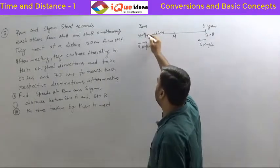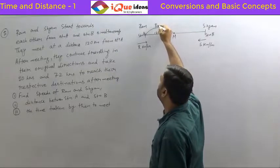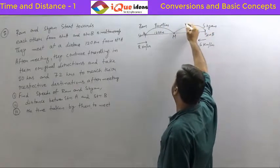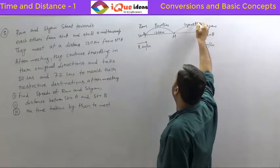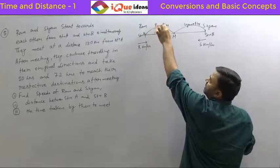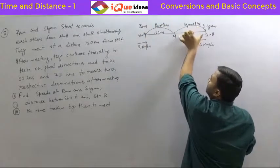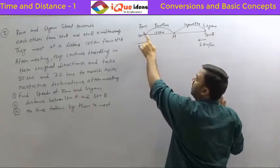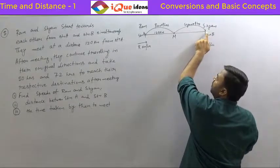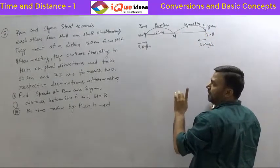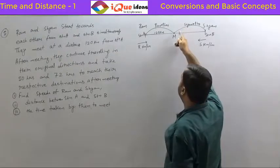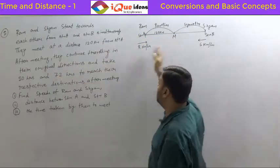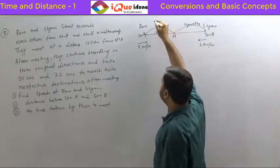Suppose they take T hours to meet. Ram goes from A to M in T hours; Shyam goes from B to M in the same time T, since they start simultaneously. After meeting, Shyam continues from M to A — that same distance AM is covered by Shyam in 72 hours after meeting.